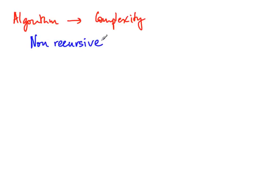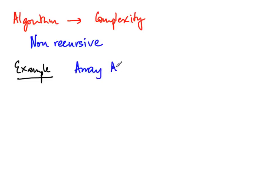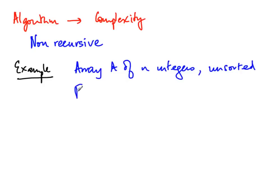Non-recursive algorithms just iterate through — there are some loops and no recursive function calls. The specific example we will start with is that we are given an unsorted array A of n integers, and what we want to do is find the largest value in A. Not necessarily its position — though we can get that too — we just want to find the largest value.